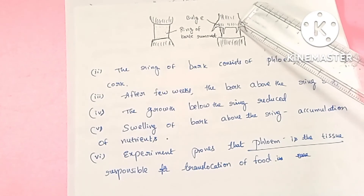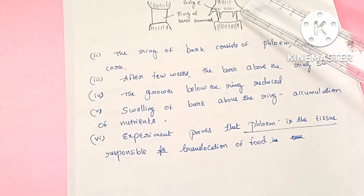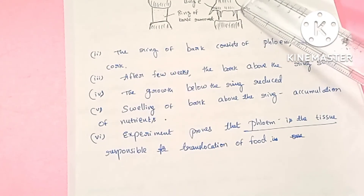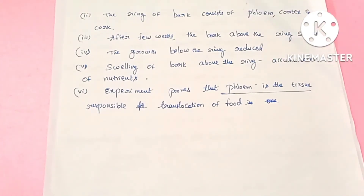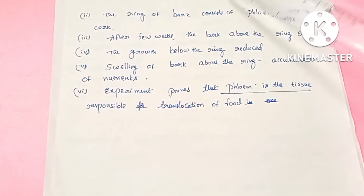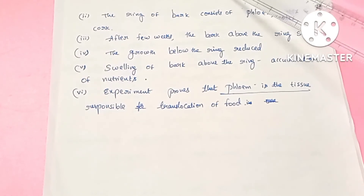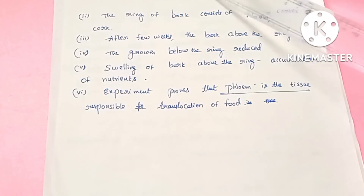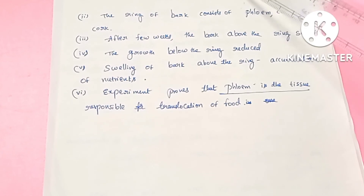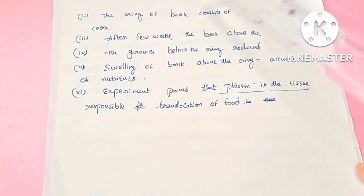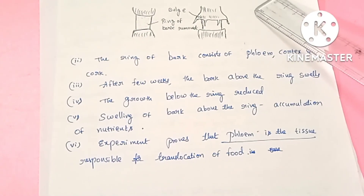Since there is no phloem below the ring, food accumulates above and cannot reach the roots. This experiment demonstrates that phloem is responsible for the translocation of food. The food cannot be translocated below the ring because the phloem has been removed. Therefore, there is no growth below the ring in the downward direction. This concludes the girdling experiment and completes the chapter on Transportation in Plants. In the next video, we will start with the next lesson: Mineral Nutrition.